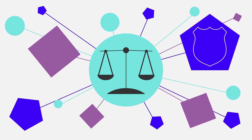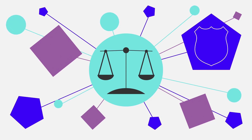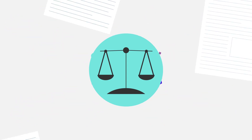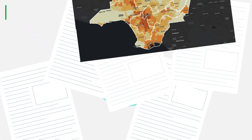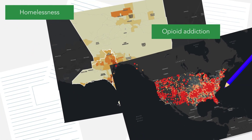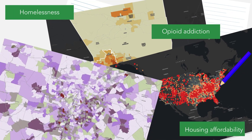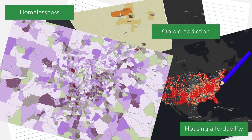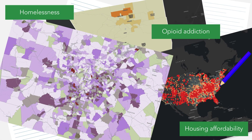The reality is that a solution may need to come from multiple disciplines. Challenges such as homelessness, opioid addiction, and housing affordability have demonstrated the value that different departments bring to the table.